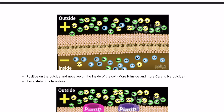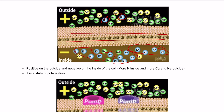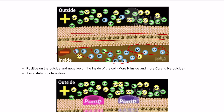Let's look at the resting membrane potential. Looking at this cell membrane diagram, there is a large amount of potassium inside the cell and very little outside. The resting membrane potential is positive on the outside and negative on the inside. The positive charge outside is maintained mainly by sodium and calcium, while the less positive charge inside is mainly formed of potassium. This state is called polarization.